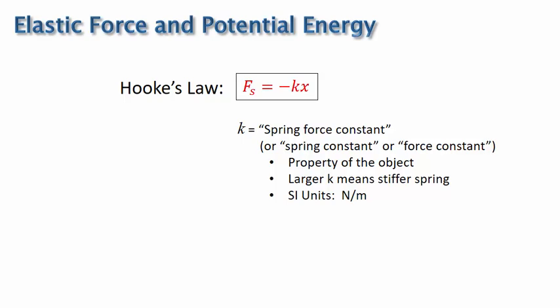The SI units for the spring force constant, which can be seen in the equation, are newtons per meter, and x in the equation is the coordinate value of x and represents how much the spring is stretched or compressed. Notice that there is a negative in the equation as well, because the direction of the force is opposite the direction of the displacement.